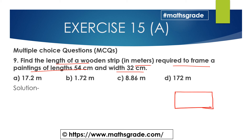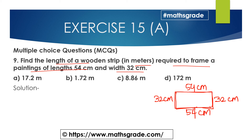The wooden strip is required to frame a rectangular painting. This is the rectangular frame of the painting. It has length 54 cm on both opposite sides, and width 32 cm on the other two sides.